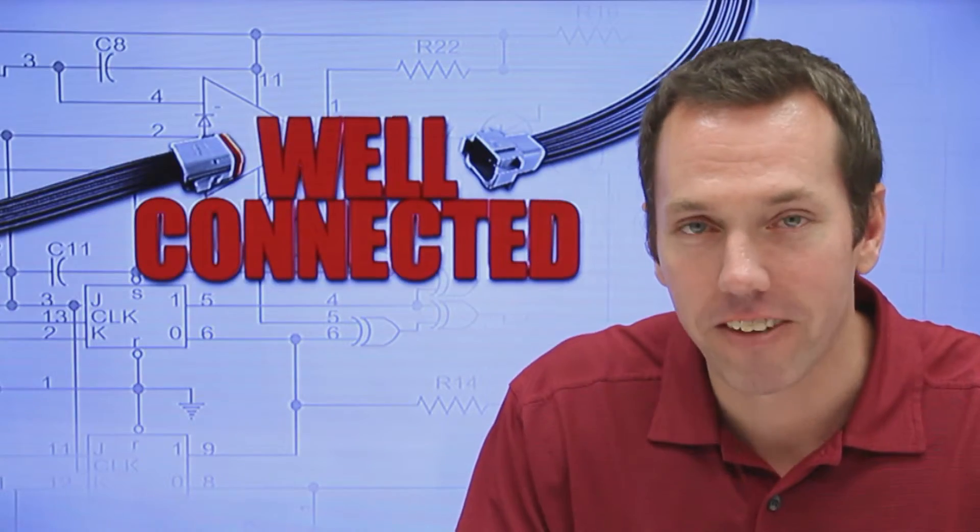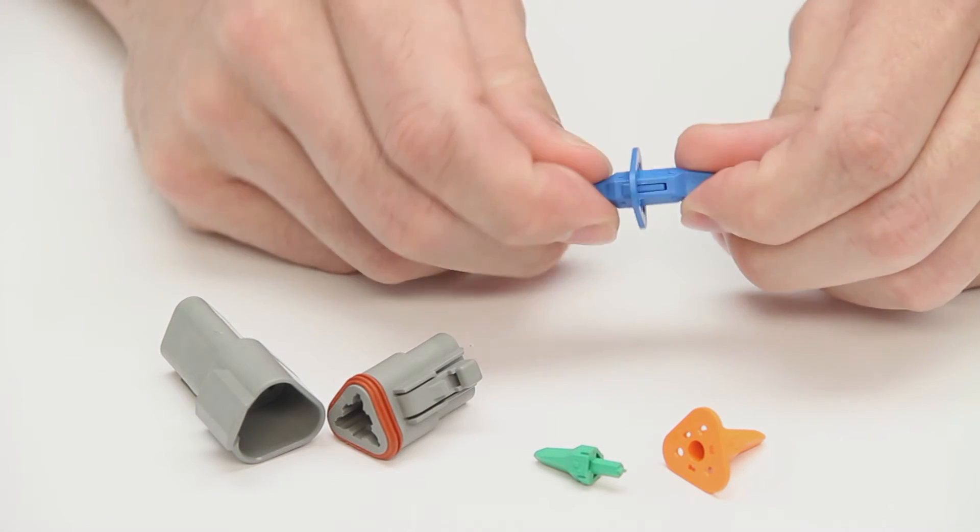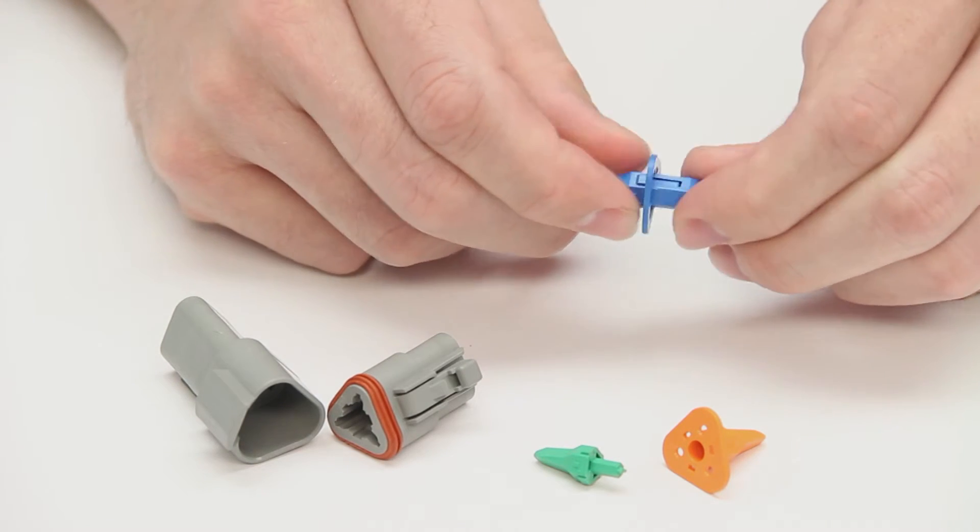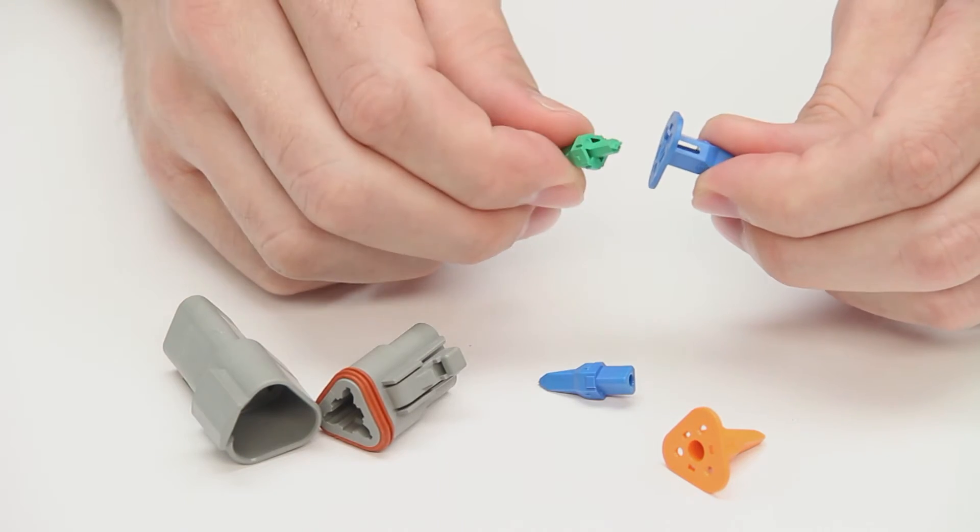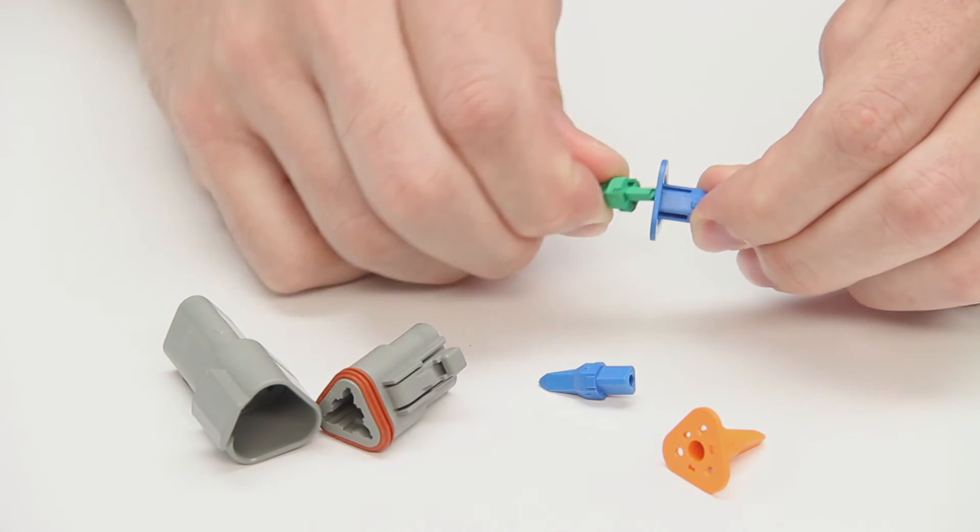Here's an insider tip. To help prevent mismating on three-way DT Series connectors, you can use a J1939 keyed wedge lock as a keying option so long as it doesn't conflict with an existing J1939 system. They'll stop a regular style wedge lock from connecting with them.